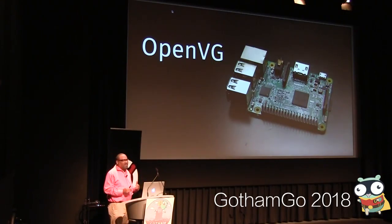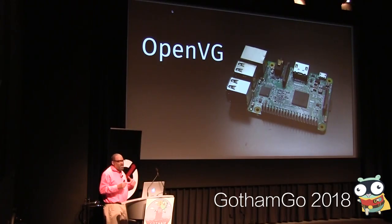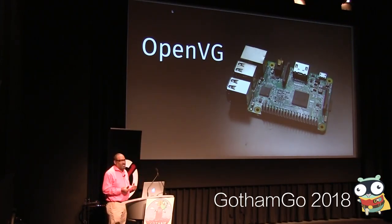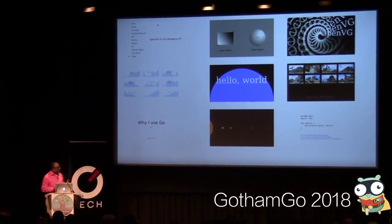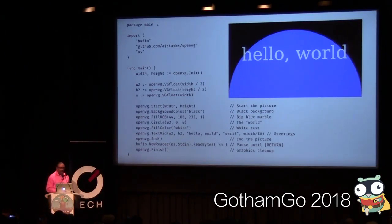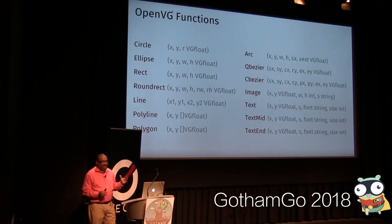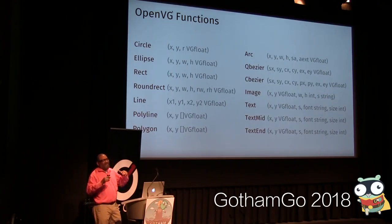The next tool I want to talk about is OpenVG. This is a Raspberry Pi — a $35 Linux computer — and what many people don't know is it has 2D accelerated graphics built into the system on a chip. I wanted to be able to program that, so I started with a C library that took basic primitives and pushed them up to the level that designers think in terms of high-level objects. I created a library called OpenVG. Here's its hello world — you think in terms of start and end, background colors, circles, text, and so forth.